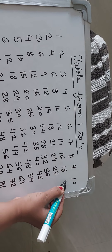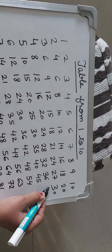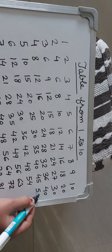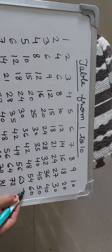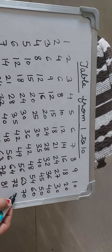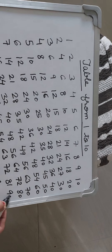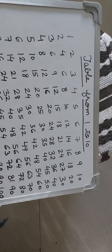And table of 10. 10 1s are 10, 10 2s are 20, 10 3s are 30, 10 4s are 40, 10 5s are 50, 10 6s are 60, 10 7s are 70, 10 8s are 80, 10 9s are 90, and 10 10s are 100.